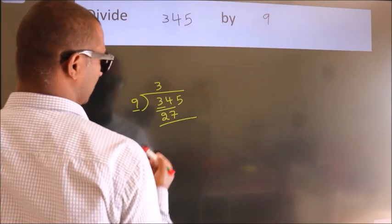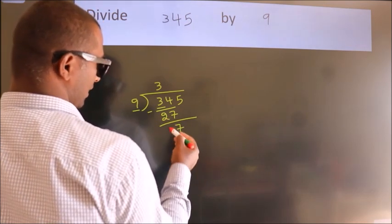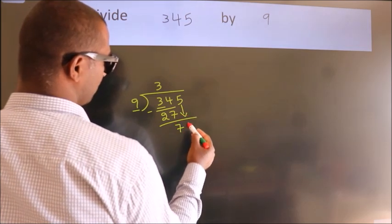Now we should subtract, we get 7. After this, bring down the beside number. So, 5 down.